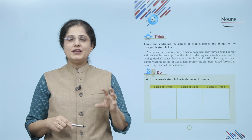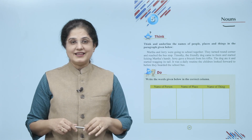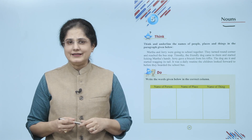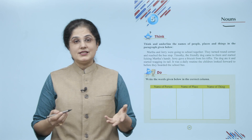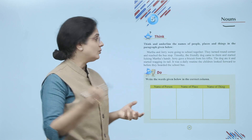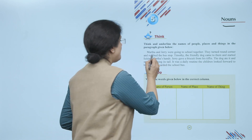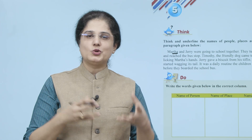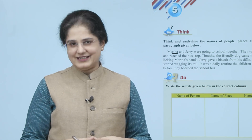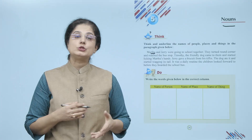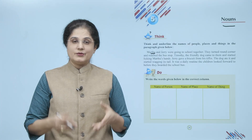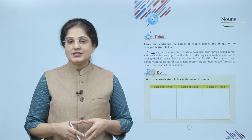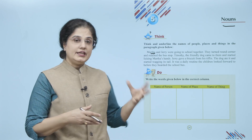To aap is paragraph me jo bhi aapko names nazar aa rahe hain, aap unhain underline karay. Jaisi ki agar mein pehla word dekhu, Martha — is tarah se aap baaki names ko underline karayay. Now let's do this: write the words given below in the correct column.